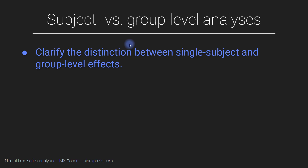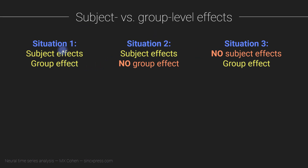Subject level and group level analyses tell you different things about the data. In this video I'm going to clarify this distinction so you understand the differences between within-subjects and across-subjects analyses, illustrated using three different scenarios with made-up data. In situation one we have statistically significant effects within individuals and also at the group level. In situation two we have significant individual effects but no group level effect. Situation three is the reverse.